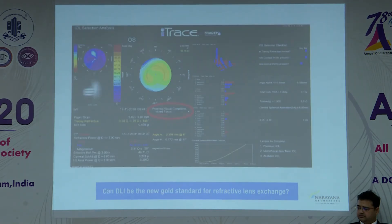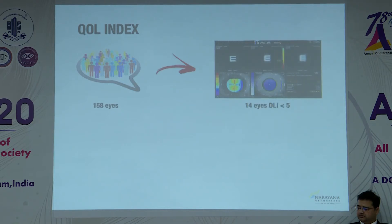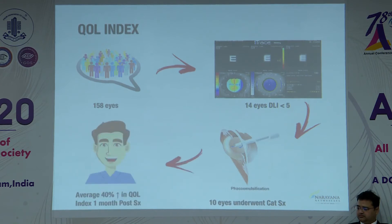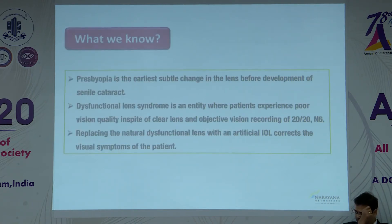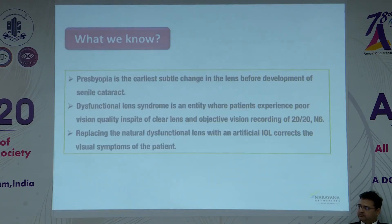Can DLI be the new gold standard for refractive lens exchange? According to the QOL index, out of 158 eyes, 14 had DLI less than 5, and we operated on 10 of these eyes based on DLI. One month later, there was a 40% increase in the happiness index of patients. Presbyopia is the earliest subtle change in the lens before cataract development. Dysfunctional lens index is an entity where patients experience poor vision quality despite a clear lens and objective vision recording. Replacing the natural dysfunctional lens with an artificial IOL corrects the visual symptoms of these patients.